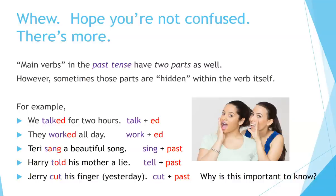Main verbs in the past tense have two parts as well. However, sometimes those parts are hidden within the verb itself. For example, 'We talked for two hours' — 'talk' plus 'ed.' 'They worked all day' — 'work' plus 'ed.' However, in irregular verbs, the past tense and the main verb may form a different word. For example, 'Terry sang a beautiful song' — 'sing' plus past tense becomes 'sang.' 'Harry told his mother a lie' — 'tell' plus past tense becomes 'told.'